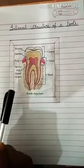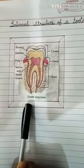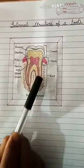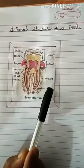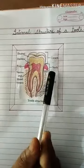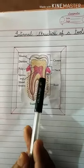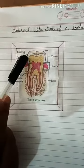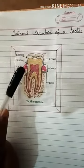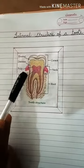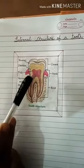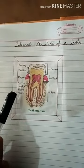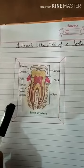Now, children, you can see the internal structure of the tooth — a diagram is given. The tooth is divided into three parts: crown, neck, and root. Crown and neck are visible, but the root is not visible. You can see enamel — the hardest substance — on the outside. Inside the enamel is dentine, and the softest part is the pulp, where you can see the nerves and blood vessels shown in blue, yellow, and red colors.